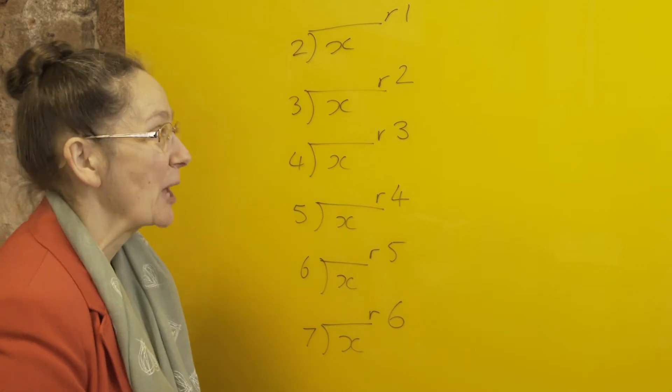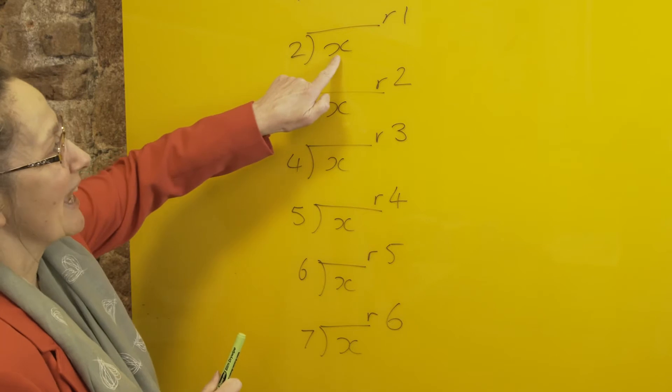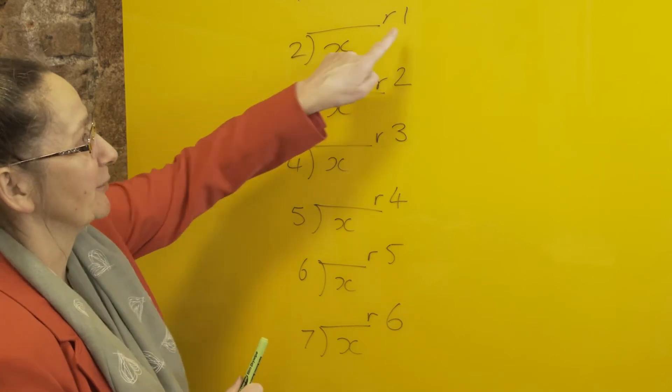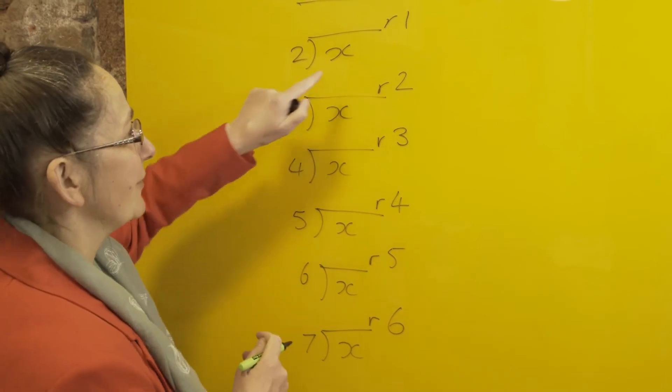There's lots of different ways of doing this, but here's one rather nice way that doesn't take too much effort. If my x divided by 2 has a remainder of 1, then x must be an odd number. But if I add 1 onto it and think about x plus 1, then that's going to be an even number.